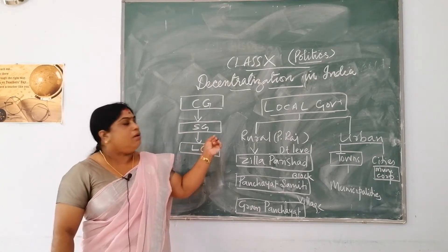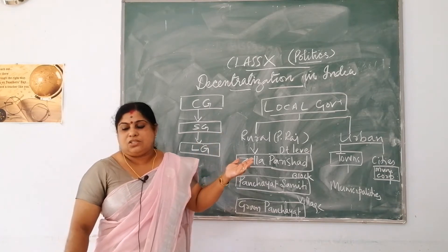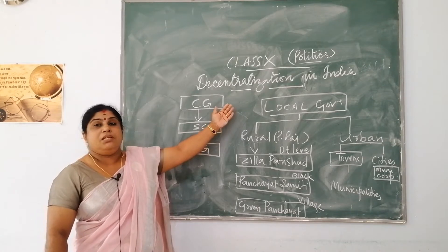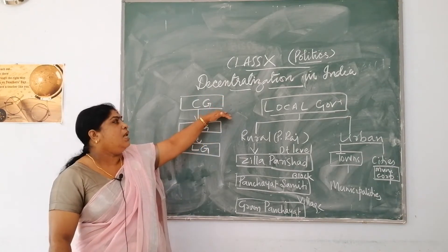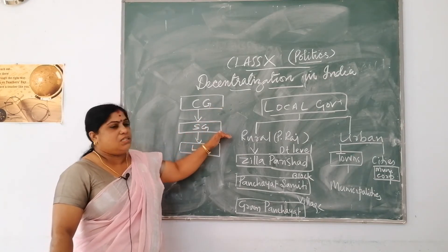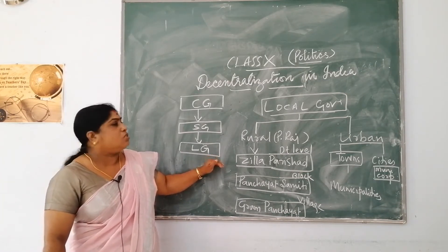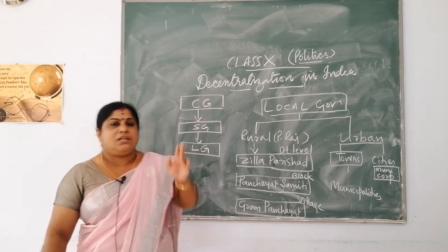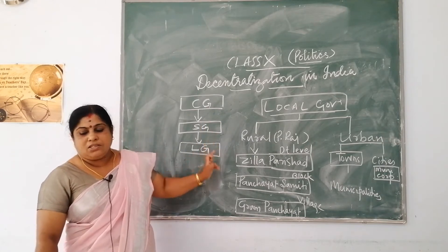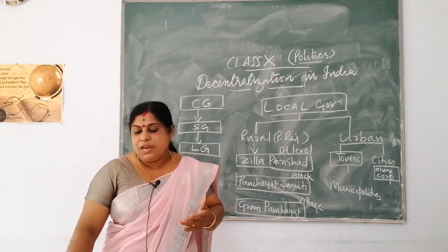Now, what is decentralization? Decentralization is just opposite to centralization. Centralization means more powers are given to the central government. So decentralization means powers are taken away from the central government as well as the state government and given to the third tier or third level of government, which we call local government. So decentralization means taking powers from the central and state government and giving it to the local government.